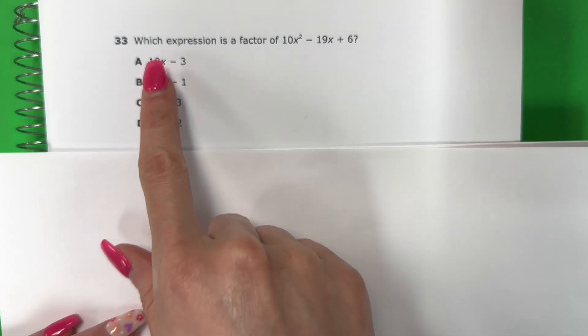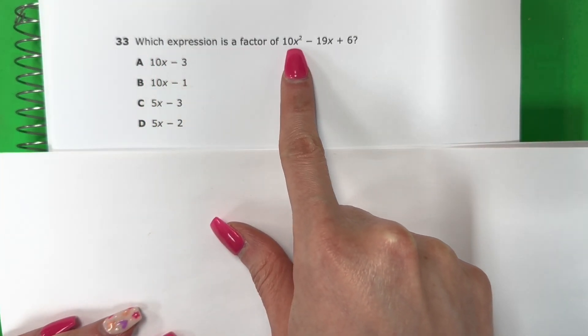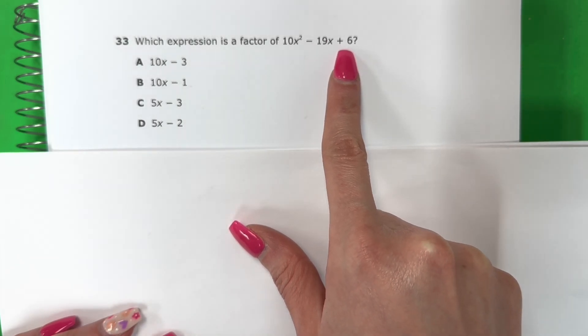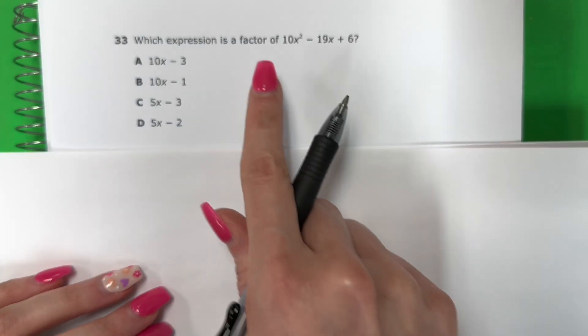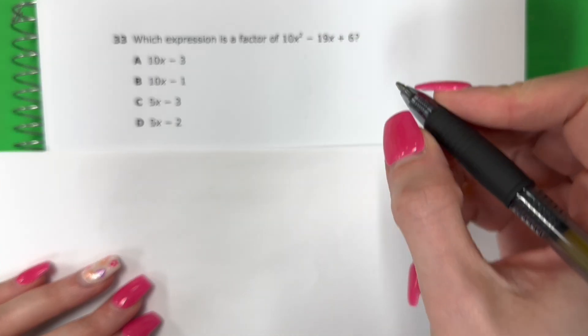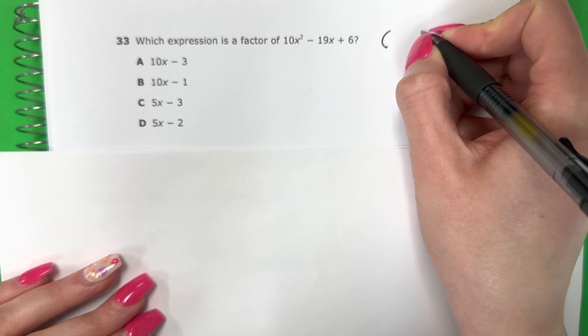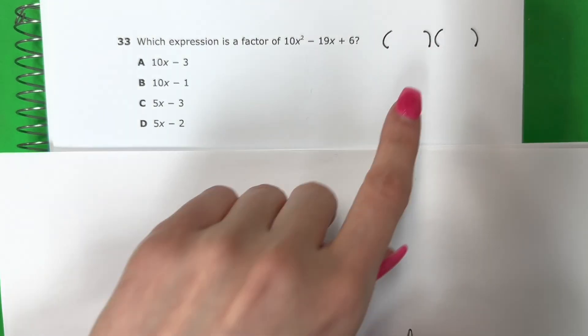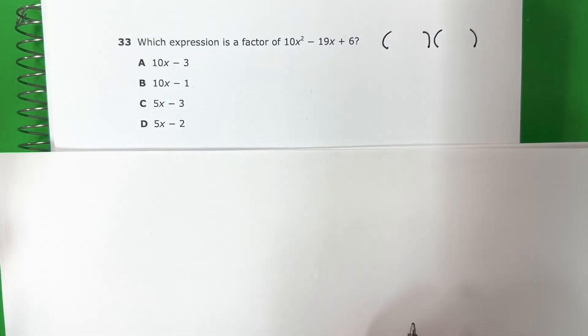Question 33. Which expression is a factor of 10x squared minus 19x plus 6? So I'm going to need to factor this. Necesito hacer factor por este. And what does that mean? ¿Qué significa eso? I want the numbers and letters in the parentheses like this. Quiero los números y las letras en paréntesis así.